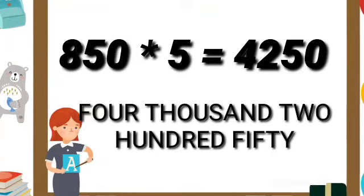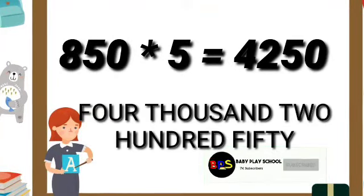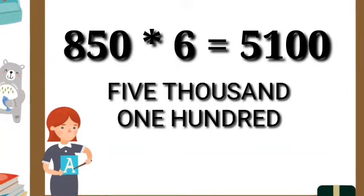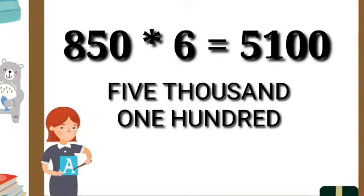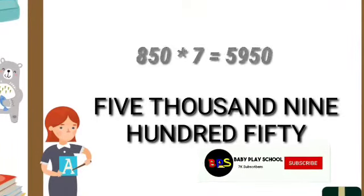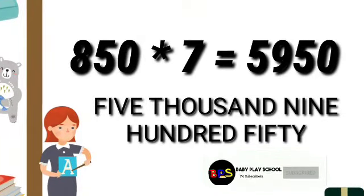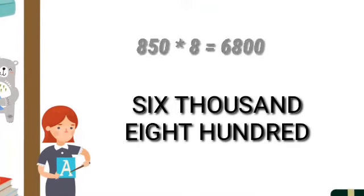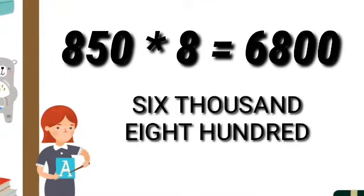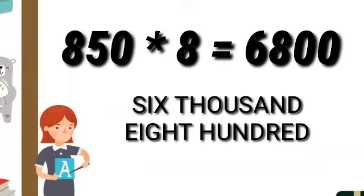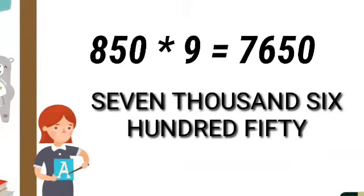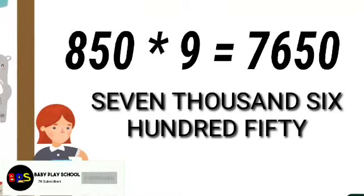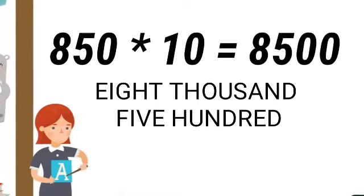850 fives are 4250. 850 sixes are 5100. 850 sevens are 5950. 850 eights are 6800. 850 nines are 7650.